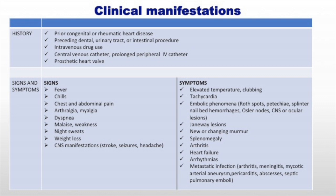Usually the main complaint is fever. If it's acute, the patient can present with fever and non-specific symptoms. So when you take your history, any patient with a risk factor presenting with fever and non-specific symptoms and signs should raise a high suspicion of infective endocarditis. In sub-acute, the symptoms usually take weeks to two months and the patient can have those symptoms for quite some time.